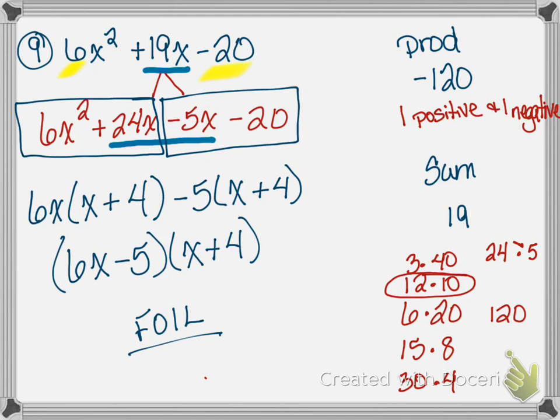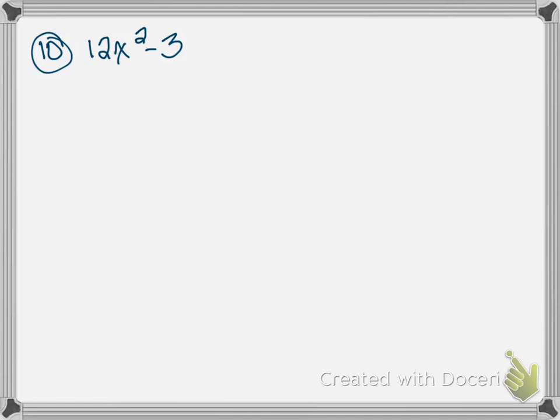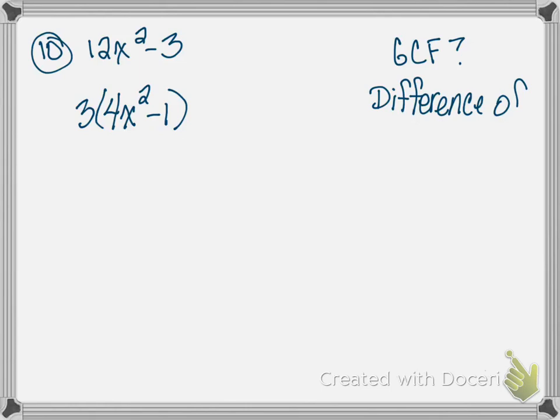Moving on to number 10. The first thing we always ask: is there a GCF? In this case, yes — I can pull a 3 out of both terms. So I factor out 3: 3 times 4x squared is 12x squared, and 3 times negative 1 is negative 3, giving 3(4x squared minus 1). We'd be tempted to stop there, but we also need to ask: is this a difference of perfect squares?